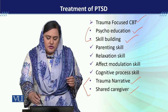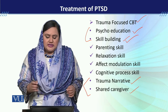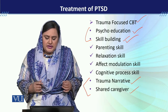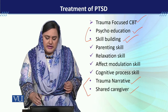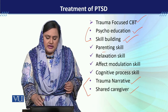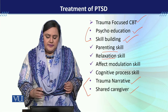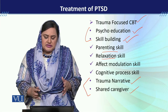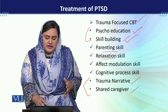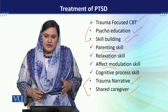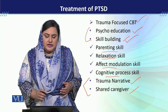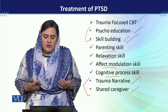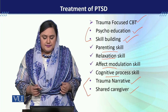फिर हम बात करते हैं skill building की. Skill building हम 4 levels पे करते हैं: एक parents की skill building, फिर relaxation skill building, फिर affect modulation, और then cognitive processing.